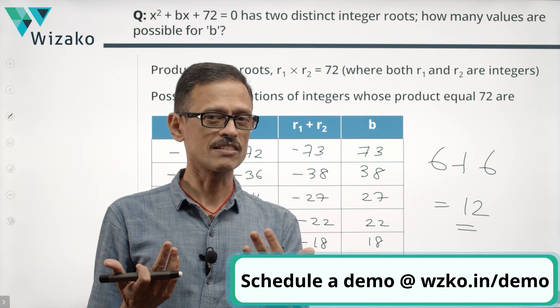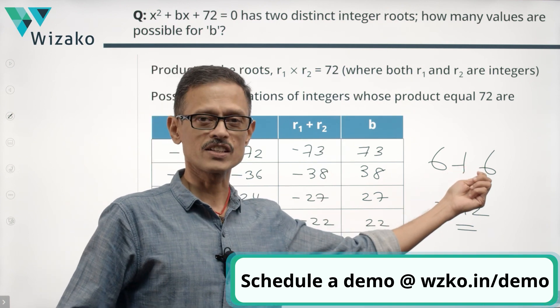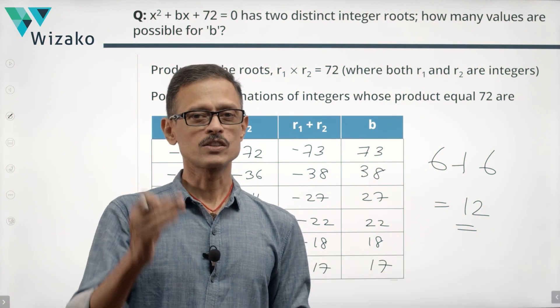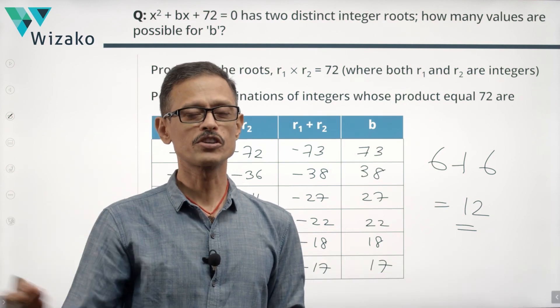That's what makes this question closer to 700. Conceptually, probably a 650 level question, but many of us might have missed out another bunch of 6 values that we have to factor in. That's what made it a little more difficult, pushed it to a 700 level.